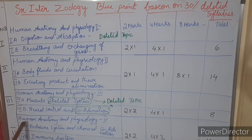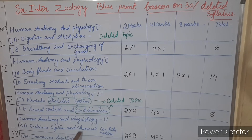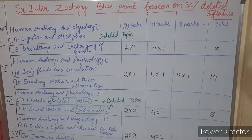Coming to Unit 4 — Human Anatomy and Physiology 4 — we have 4A: Endocrine System and Chemical Coordination, and 4B: Immune System. From these two units we may get two two-mark questions — one from 4A or 4B — and two four-mark questions. So the total marks from this unit are 12 marks.